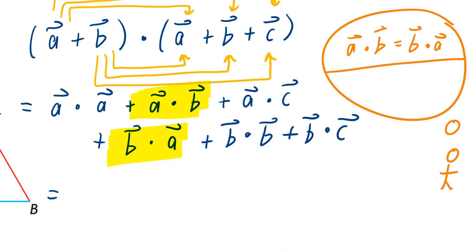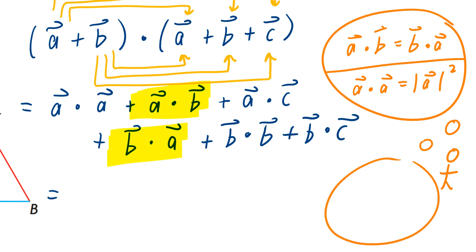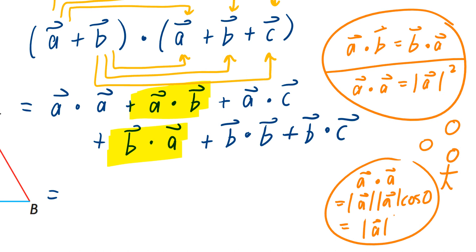Another concept to think about is that when you take the dot product of any vector with itself, that equals the magnitude of that vector squared. When you take a dot a, you're taking the magnitude of a times the magnitude of a times cosine of the angle between them. The angle between any vector and itself is zero, cosine of zero is one, so this gives you the magnitude of a squared.